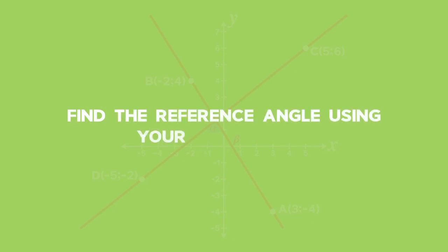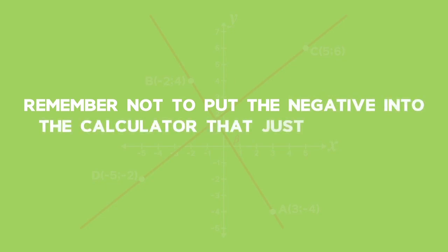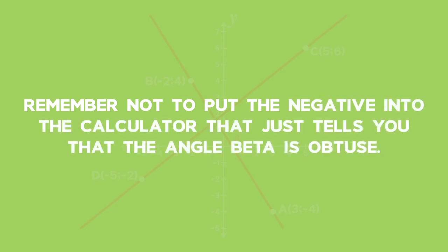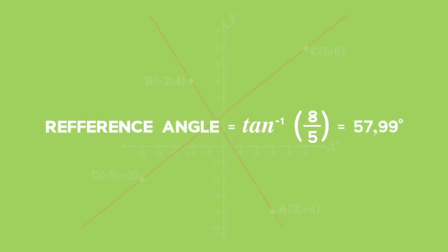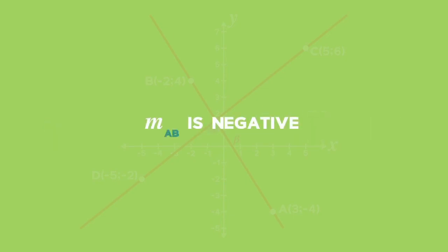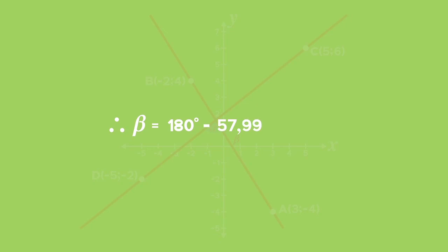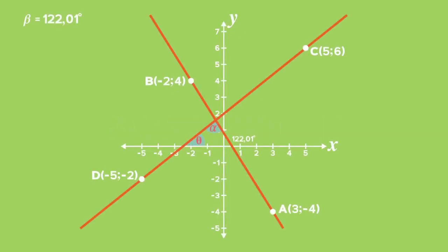Find the reference angle using your calculator. Remember not to put the negative into the calculator — that just tells you that the angle beta is obtuse. Enter second function, tan, 8 over 5, and you get a reference angle of 57.99 degrees. Since the gradient of line AB is negative, beta equals 180 degrees minus 57.99 degrees, which equals 122.01 degrees.